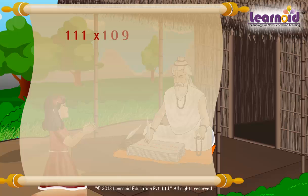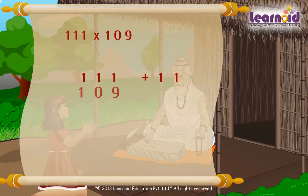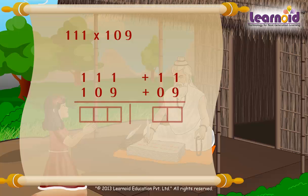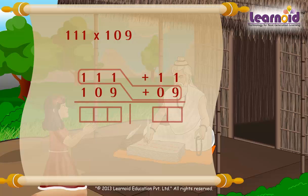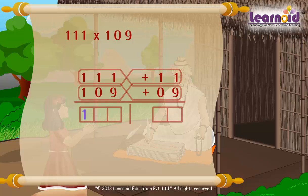Let's take one more example: 111 into 109. Find the surplus of 100. In 111 it is 11, in 109 it is 09. Now find the left digits by cross addition: 111 plus 09 or 109 plus 11 equals 120.